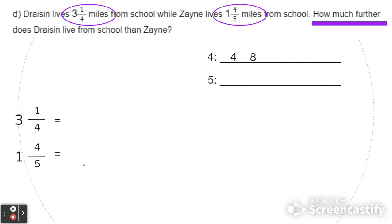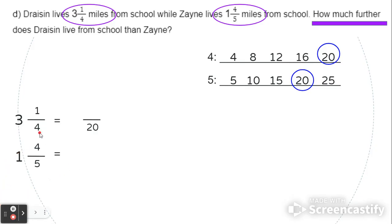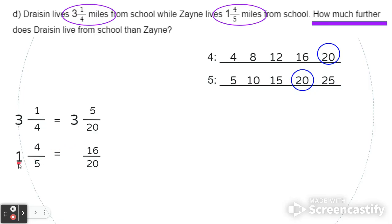For 4, we have 4, 8, 12, 16, and 20. For 5, we have 5, 10, 15, 20, and 25. When we look at both of these lists, we can see the number 20 can be found in both lists. So we're going to rewrite both mixed numbers where the denominator is 20. For 3 and 1 fourths: 4 times 5 is 20, so we multiply the numerator by 5. 1 times 5 is 5. The whole number 3 stays the same. For 1 and 4 fifths: 5 times 4 is 20, so we multiply by 4 on the top. 4 times 4 is 16. The whole number 1 stays the same.